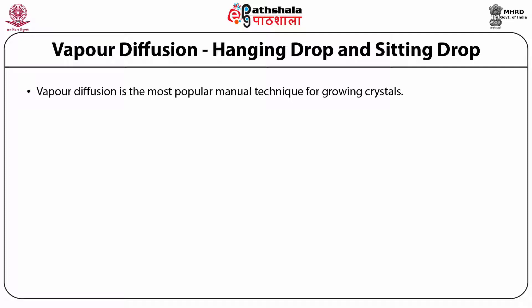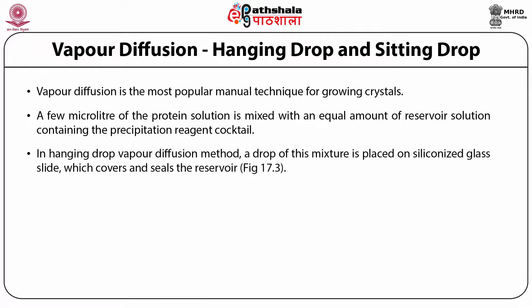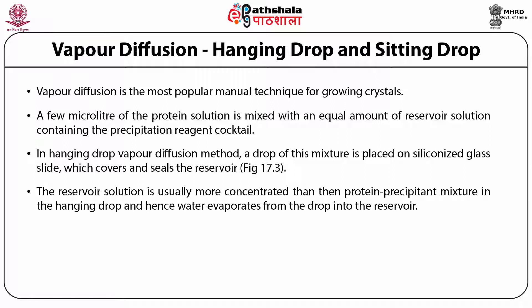Vapor diffusion is the most popular manual technique for growing crystals. Now robotic crystallization has become possible, where unnecessary wastage of protein or buffer solution is avoided and minute samples can be handled more efficiently. A few microliters of protein solution is mixed with an equal amount of reservoir solution containing the precipitation reagent cocktail. In the hanging drop vapor diffusion method, a drop of this mixture is placed on a siliconized glass slide which covers and seals the reservoir. The reservoir solution is usually more concentrated than the protein-precipitant mixture in the hanging drop, and hence water evaporates from the drop into the reservoir.